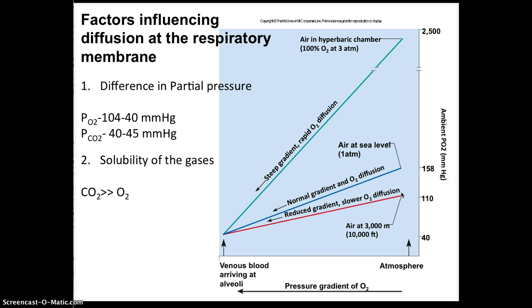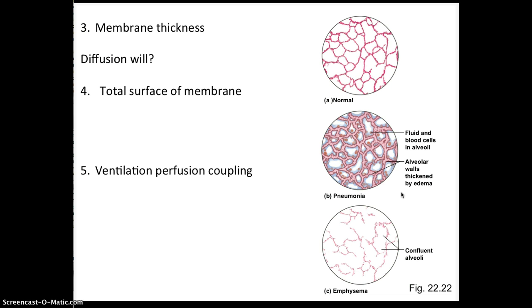Both oxygen and carbon dioxide exchange can be influenced by membrane thickness. Diffusion time is dependent on the path length — the longer diffusion takes, the less material can move from the alveoli to the blood for oxygen, or from the blood for carbon dioxide. Diffusion slows dramatically when the membrane gets thicker. In pneumonia, fluid in the lungs thickens the alveolar walls via edema. Even going from a normal 0.5 micrometers to just 1 micrometer doubles the time for oxygen to cross the membrane — and that's where the danger lies.